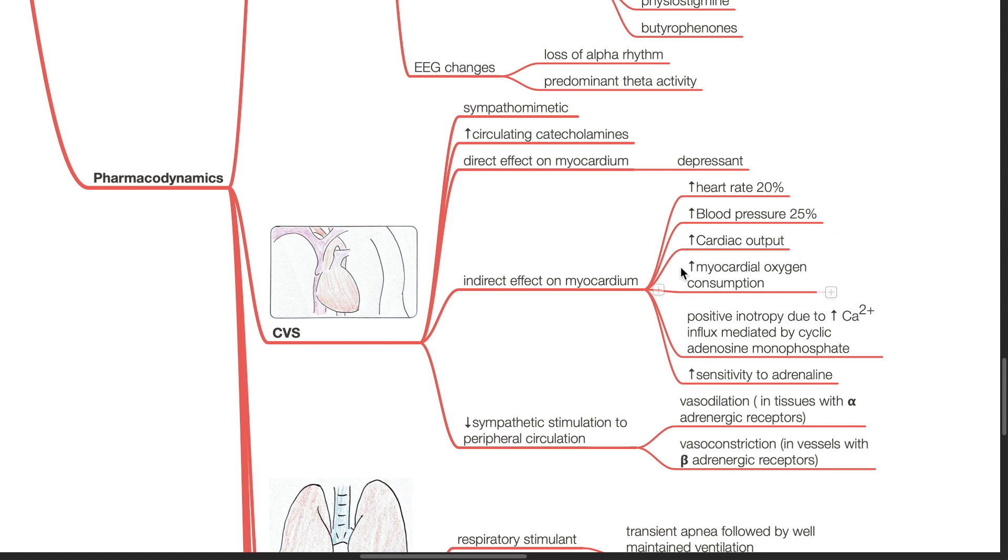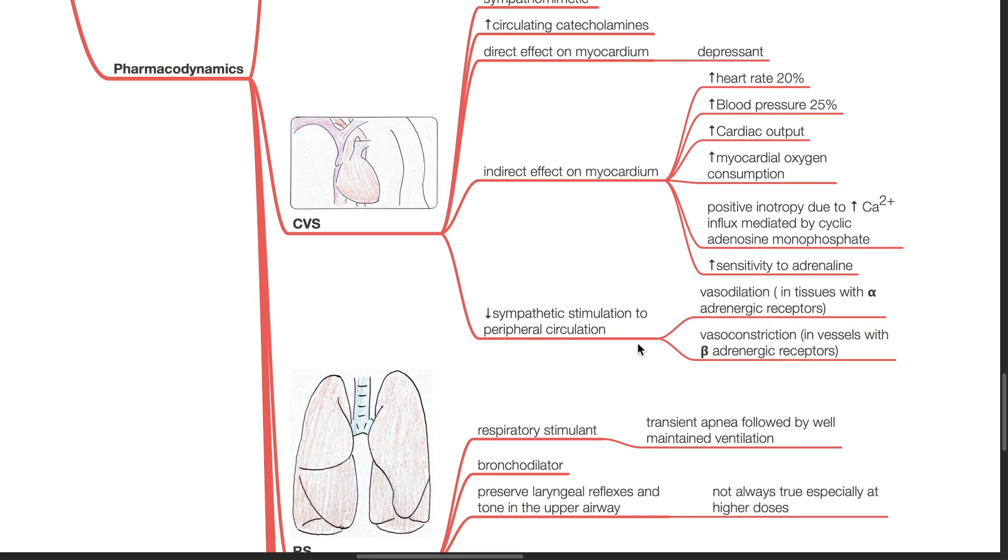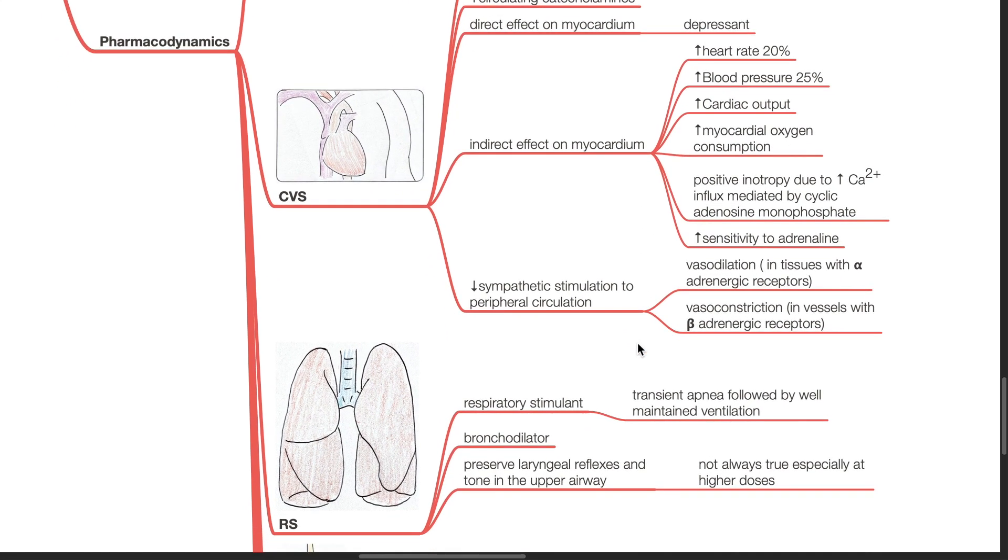Increased myocardial oxygen consumption, positive inotropy due to increased calcium influx mediated by cyclic adenosine monophosphate, and increased sensitivity to adrenaline. Ketamine causes reduced sympathetic stimulation to the peripheral circulation, resulting in vessel dilation in tissues with alpha-adrenergic receptors, and vessel constriction in vessels with beta-adrenergic receptors.